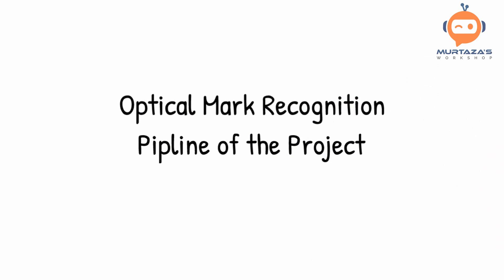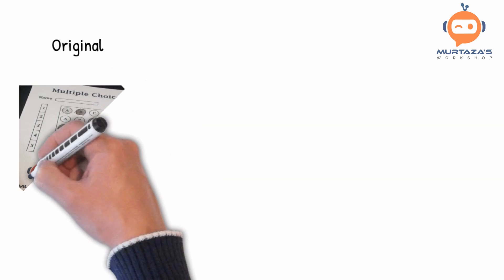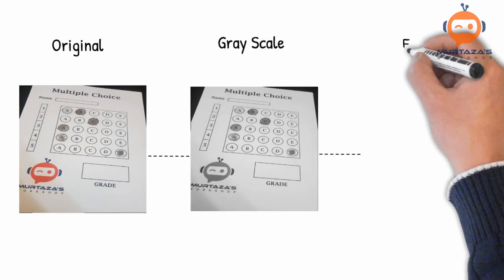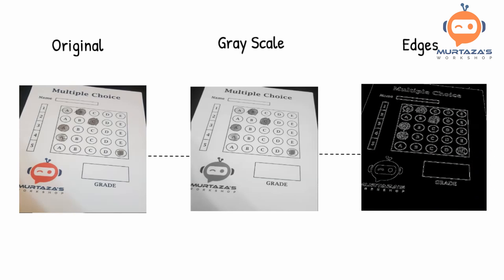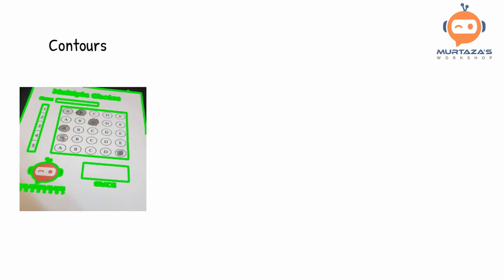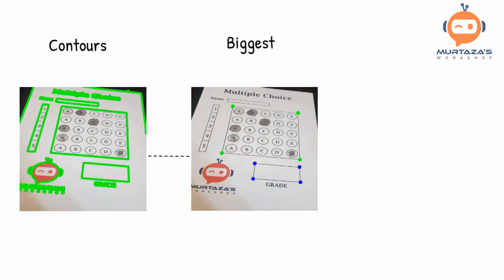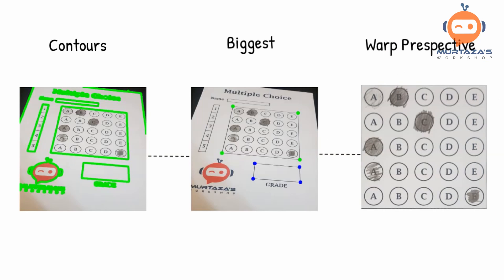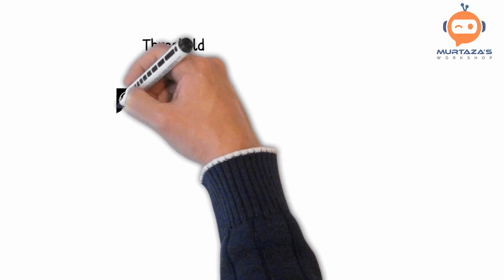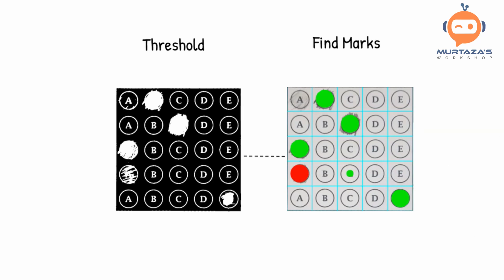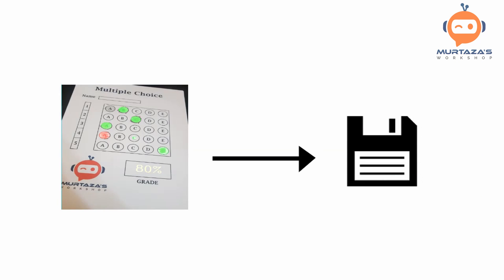Let's look at the pipeline first. We are going to take our original image and convert it into grayscale. Then we will find the edges in this grayscale image. Next we are going to find all the contours present in the image and from those we will find the biggest rectangles and their corner points. Then we will take the bird's eye view, which is the warp perspective. Later we will apply some threshold and find the marks where each of the marks are present. Lastly we will save our final answer with the score.